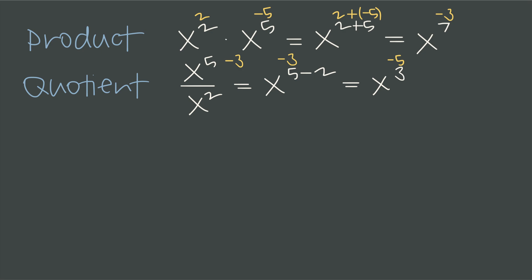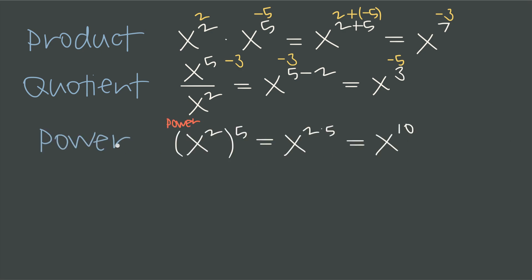Negative exponents don't affect the power rule for exponents either. When we have the power of a power — something like x squared raised to the fifth power — the rule tells us to multiply those exponents, giving x to the 2 times 5, or x to the 10. If that outer exponent is negative 5 instead, we'd have 2 times negative 5, and the result would be x to the negative 10.